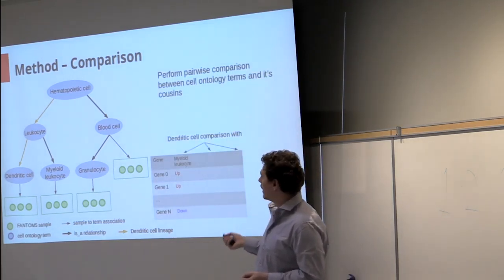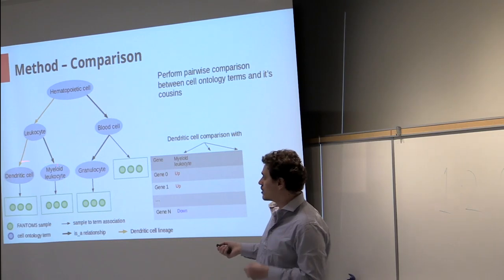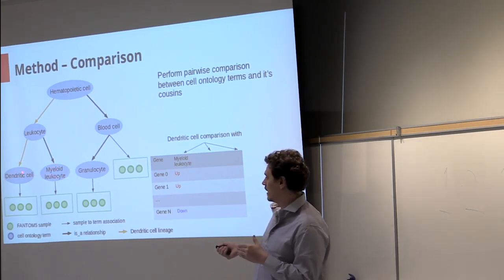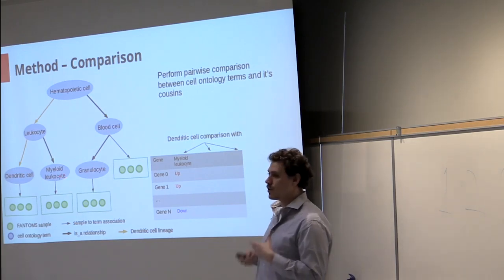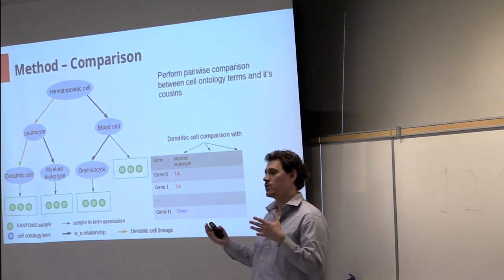So for each comparison we compare a pair of cell types, dendritic cell versus its cousins, so in this case myeloid leukocytes, and we run our random forest method to find the genes that discriminate between the two cell types.